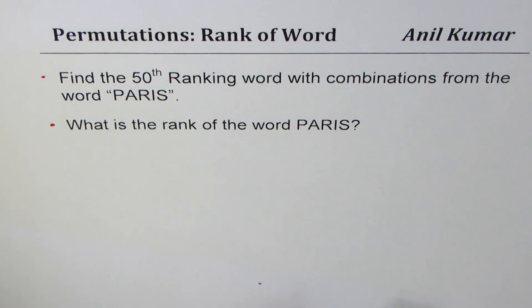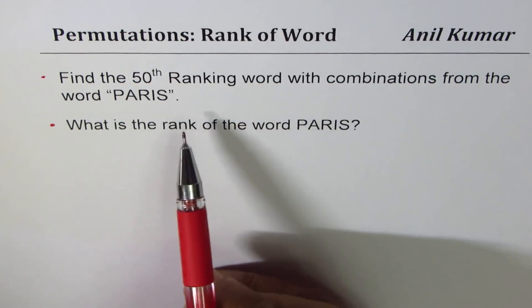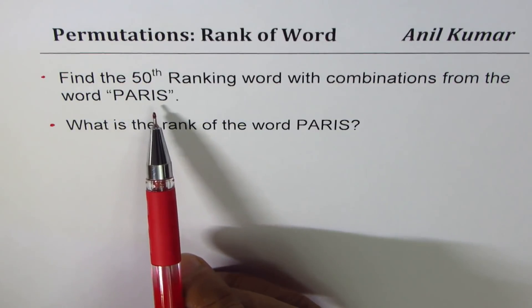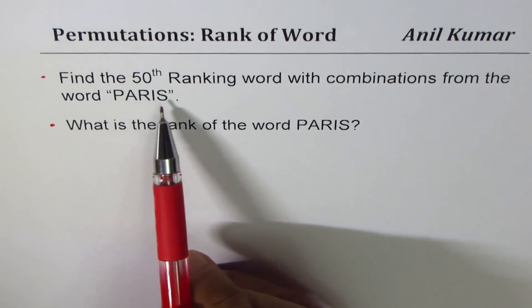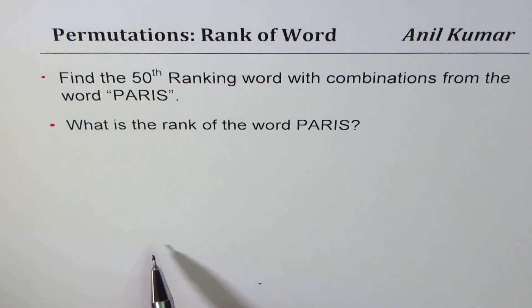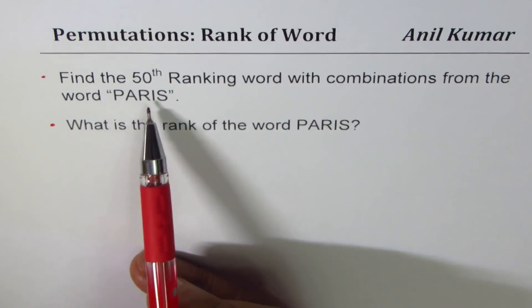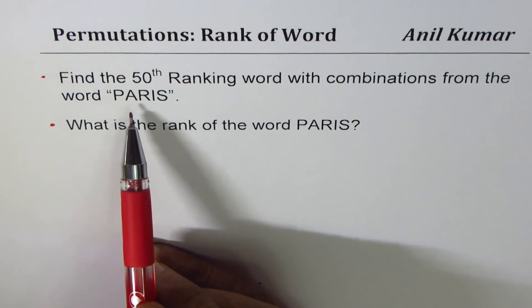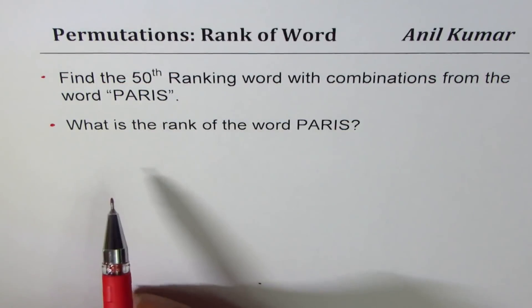Rank of the word really means that you have to list all possible combinations of making words with the letters P-A-R-I-S. And amongst those, at which position will Paris appear - that is what gives it its rank. So alphabetically arrange them as it is done in dictionary, all those words which can be formed with P-A-R-I-S. And then the position of Paris is its rank.